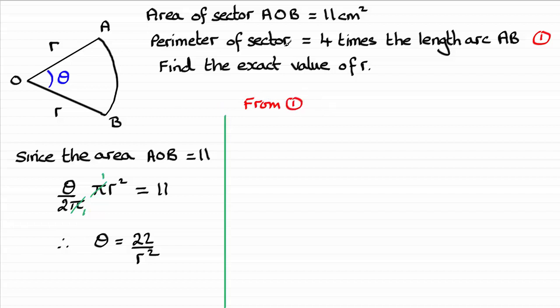Now when it comes to the perimeter of the sector, the distance all the way around, then what we've got is R here and another R there. So that's going to be a total of 2R. And then to that, we've got to add this arc length AB.